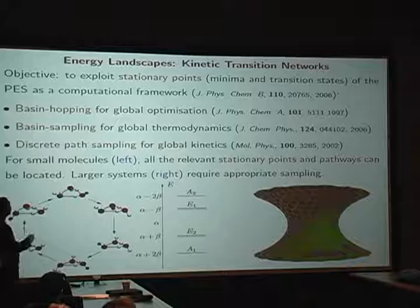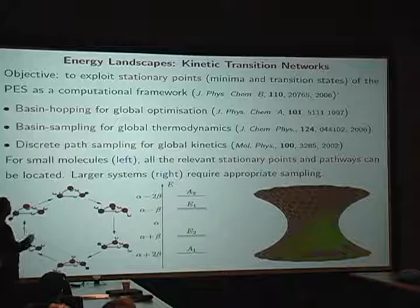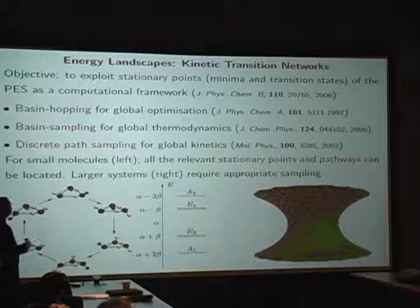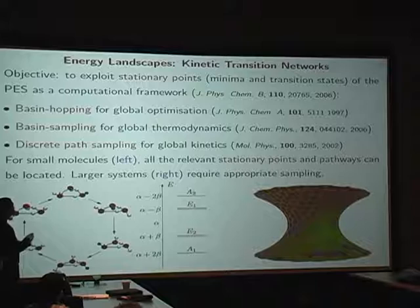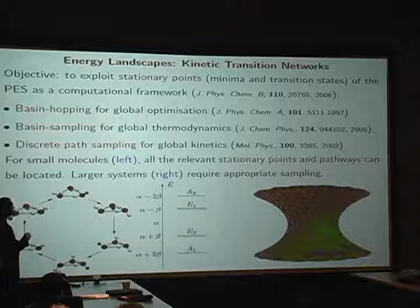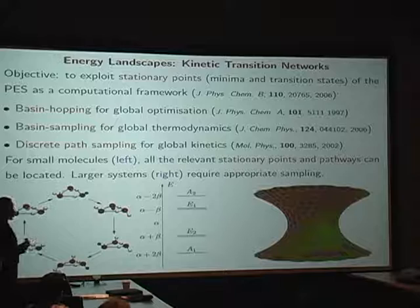And the three main strands are structure prediction, for which we're using basin hopping for global optimization. So we'll show you an example of that. Basin sampling for global thermodynamics. I've cut all that. I'm not going to do it, because this meeting is supposed to be about transition networks, so we need discrete path sampling to describe global kinetics. And this means the construction of minimum transition state, minimum triples that are all connected together to try and converge the property of interest, which is usually a rate constant in this case.